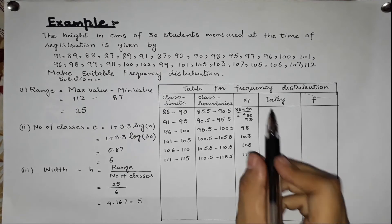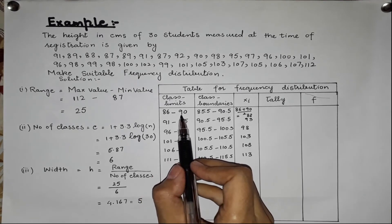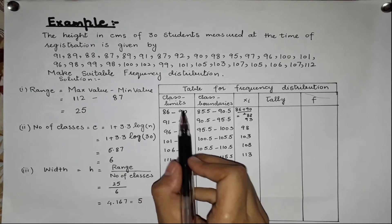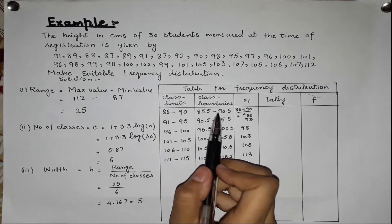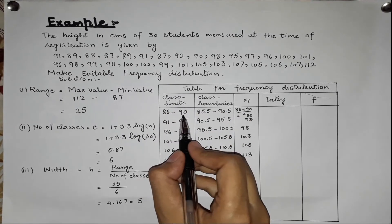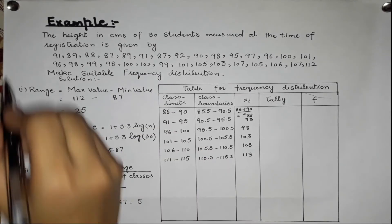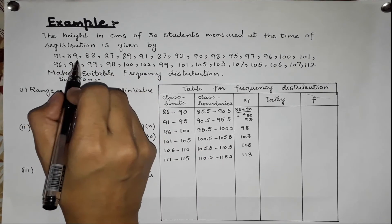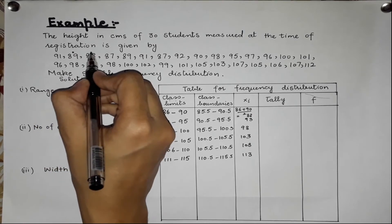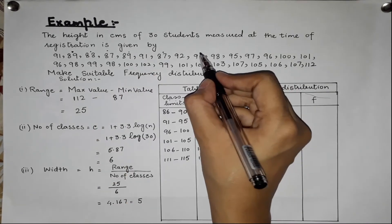Now the next step is tally. We go back to our data and check values falling in each class. For the class 86 to 90, we check the data and we find values: 89 exists — 1, 2, 3, 4, 5, 6 values fall in this class.